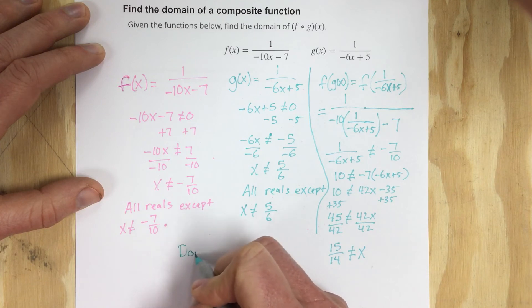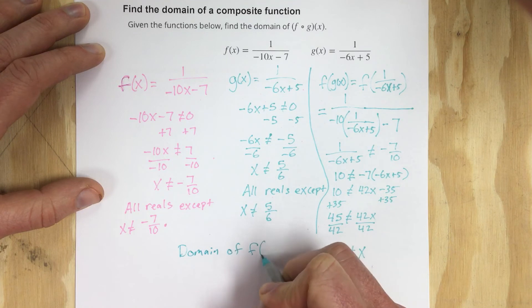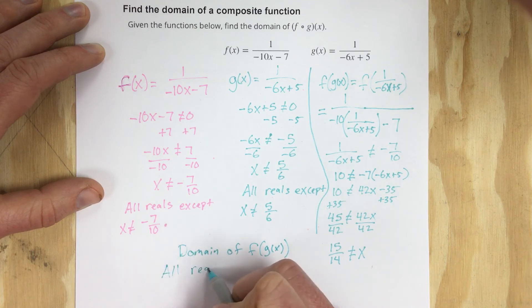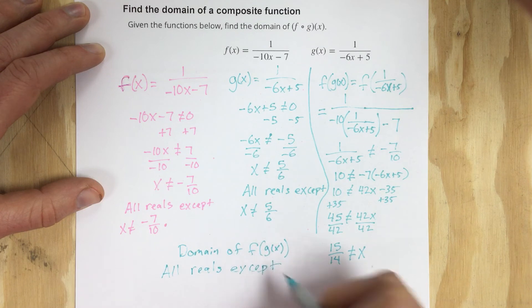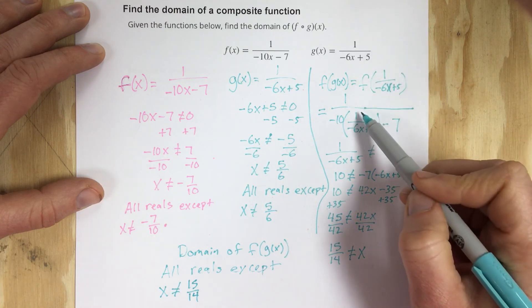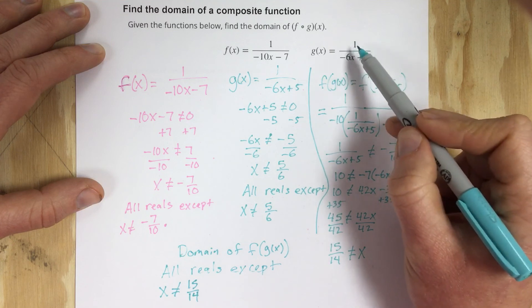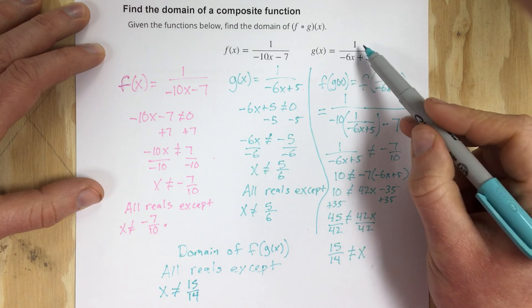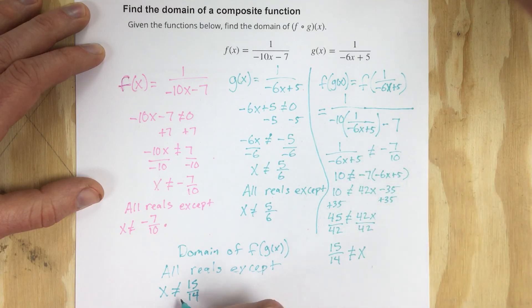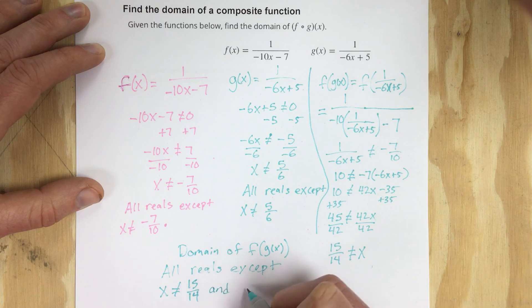So the domain of f of g of x is all reals except x cannot equal 15 over 14. But we also know that the original g function, 1 over negative 6x plus 5, can't have 5 sixths plugged in, because that gives 1 divided by 0. So the domain of f of g of x is all reals except x cannot equal 15 over 14 and x cannot equal 5 sixths.